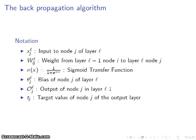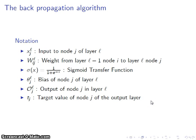T sub j is going to be the target value for the jth node of an output layer. What I'm going to do is provide an input, compute the output, tell it what I want the output to be — these T sub j values — and then use the difference between those to compute a delta, and propagate that delta backwards through the network to adjust it and train it. So this is the notation.